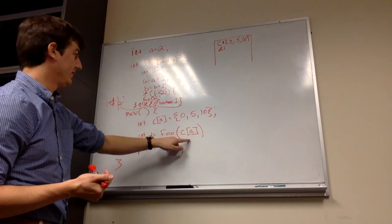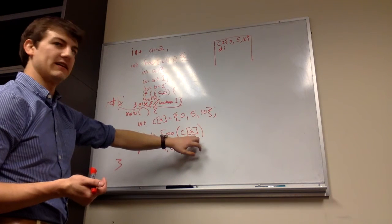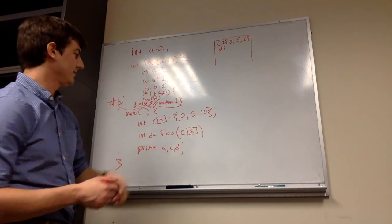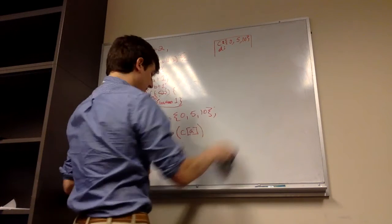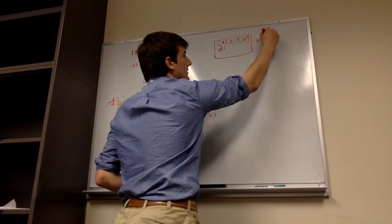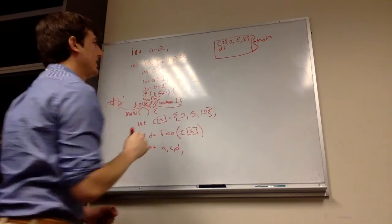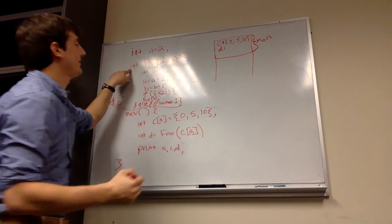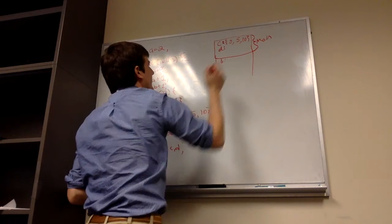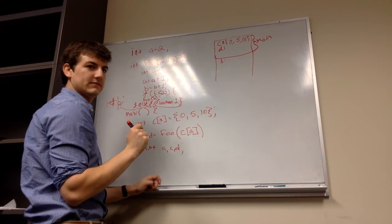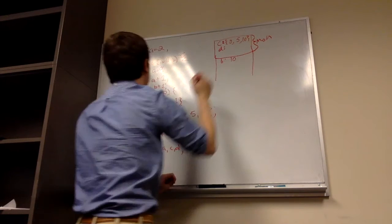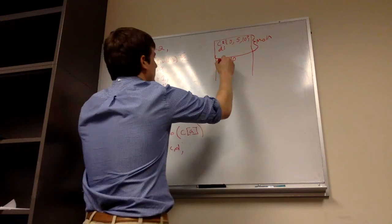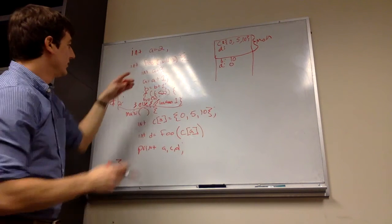We're going to call foo, and we're doing pass by value. So we have C of A. What's the value C of A? What's A? Two, exactly. And then what's C2? 10. So we're going to call function foo and pass in 10. So this is all main's function frame right now. So we call foo. So now we have a new function frame on here. Does foo have any parameters? Yes. B, what's the value now of B? 10, because that's what we passed in.